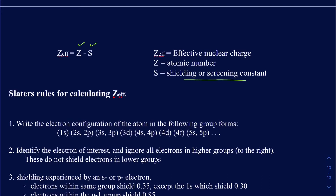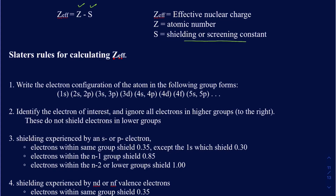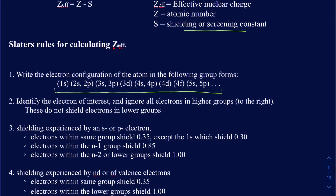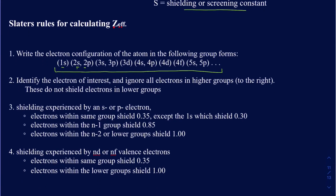The shielding constant depends on which subshell you are in. To calculate Z-effective, arrange the electronic configuration in this order: 1s in one group, then 2s and 2p together, then 3s and 3p together, and so on — each set in parentheses represents a group. When calculating Z-effective for, say, a 3p electron, you ignore any electrons in 3d, 4s, or higher — only electrons to the left matter, since inner shell electrons shield more effectively than valence shell electrons.